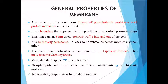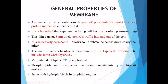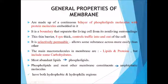Let's look into the general properties of the plasma membrane. The plasma membrane is made up of a continuous bilayer of phospholipid molecules with protein molecules embedded in it. It is actually a boundary that helps to separate living cells from their non-living surroundings. The layer of the plasma membrane is thin — with eight nanometer thickness — and helps to control the traffic into and out of the cell.